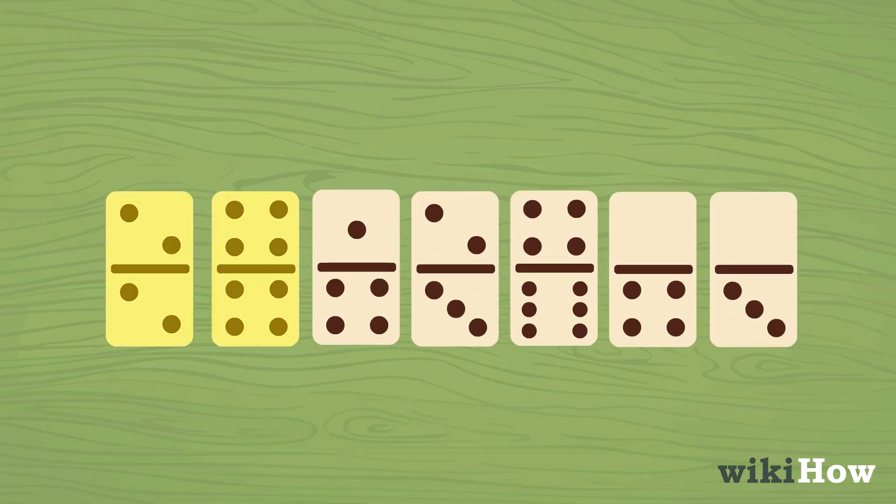Dominoes that have the same suit on both sides are valuable, as are multiple dominoes in the same hand that share a suit. You can also earn extra points with dominoes that have a total of five or ten pips.